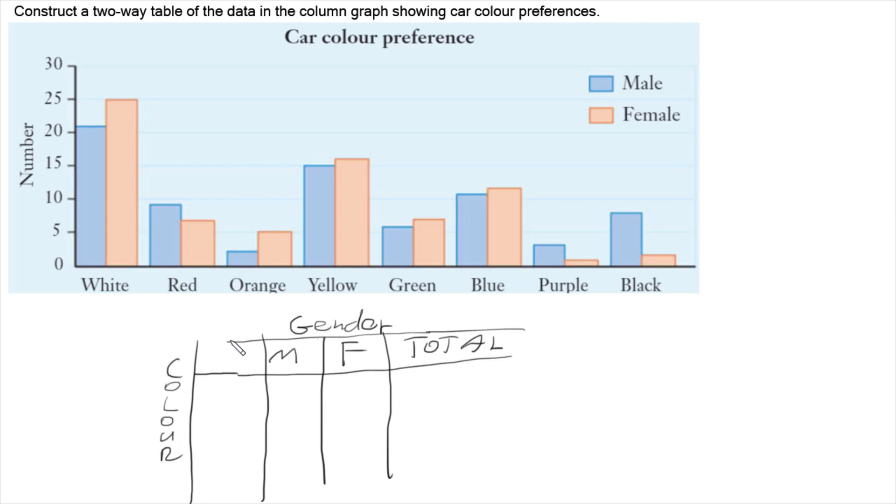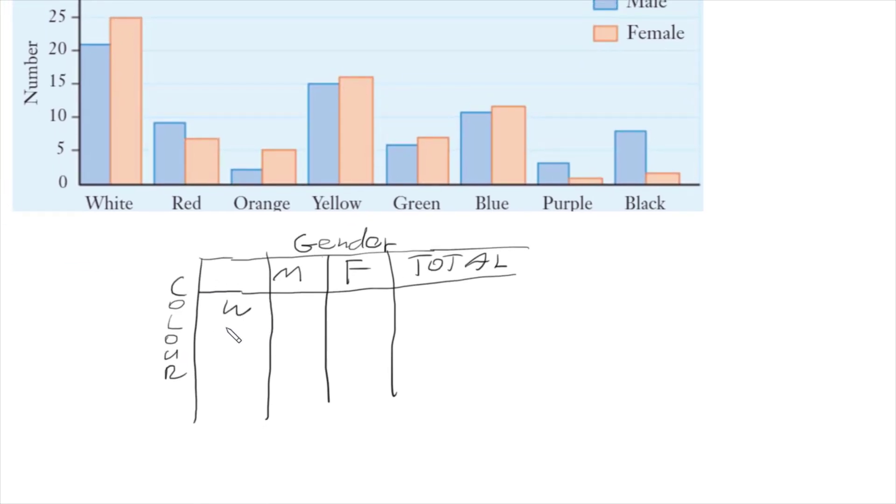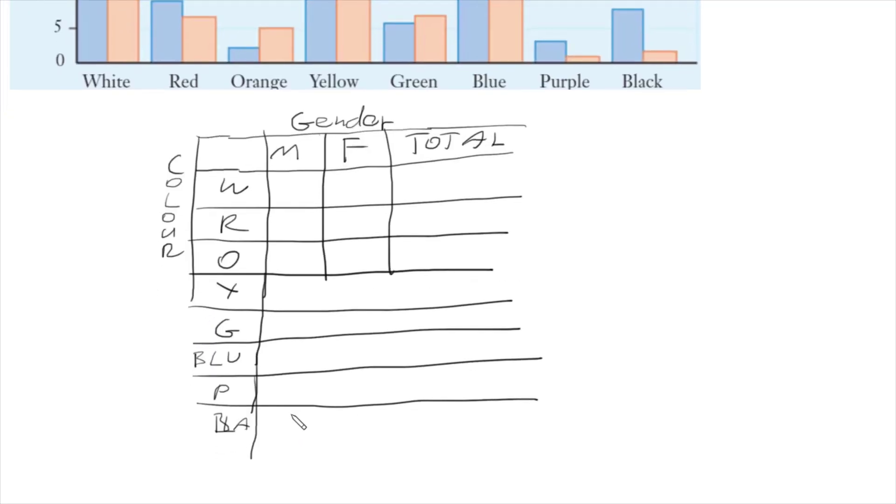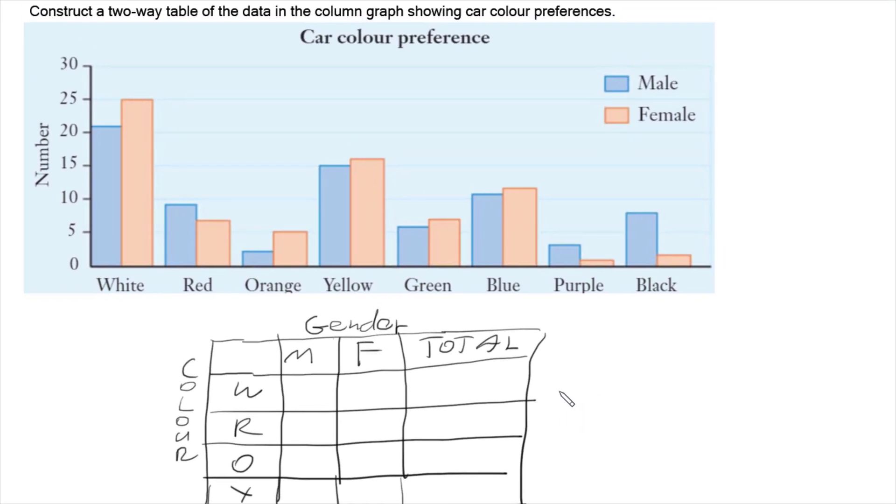So if we go through our colors, we've got white, red, and lastly our total. So filling in the rest of the cells to stretch it out, I've got my table. And now all I have to do is go through the graph and put the numbers into the right spot.